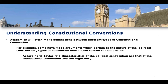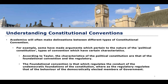The characteristics of the political constitution, according to Taylor, are those of foundational convention versus regulatory convention. The foundational convention is the part of the constitution regulated on the basis of its undemocratic foundations — things like the royal prerogative and the House of Lords. On the other hand, we have the regulatory conventions of the political constitution, which look to the behavior of democratically elected members of government and how to regulate them — things like the Salisbury convention, ministerial responsibility, and the appointment of ministers.